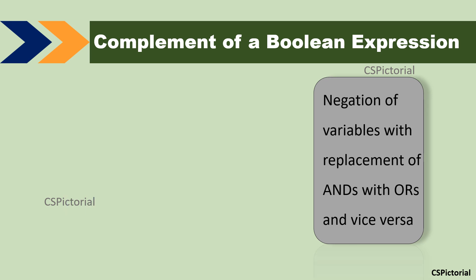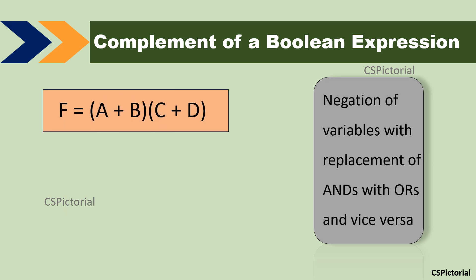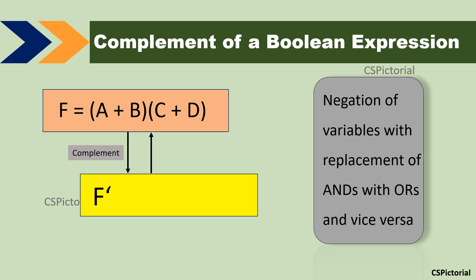This is another example. The complement F bar is derived the same way as in the previous example. Replace each item with its complement. So the complement of the given Boolean expression becomes F bar equal to A bar B bar plus C bar D bar.